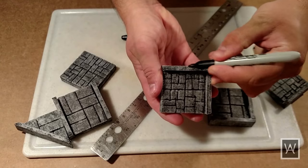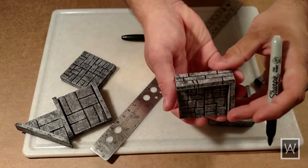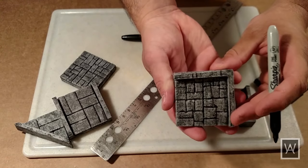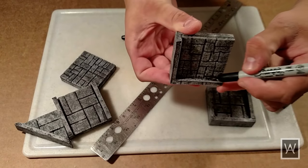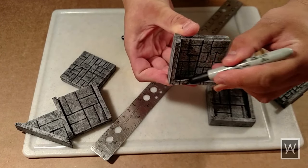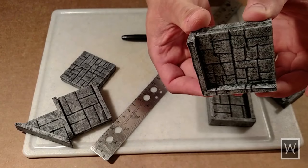At the top of the wall, continue these vertical lines over the top and down the interior of the wall. This, surprisingly, goes miles toward really selling the wall as a brick wall.